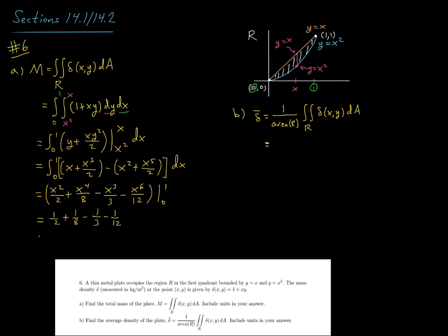When we evaluate at 0, we're just going to get 0. So if you combine all of that, common denominator is 24, we'll get 5 24ths.